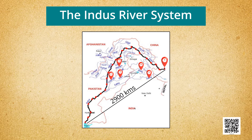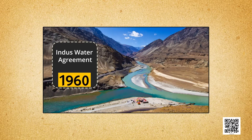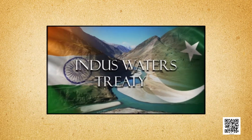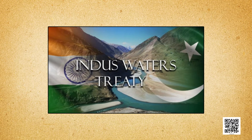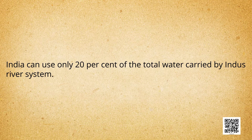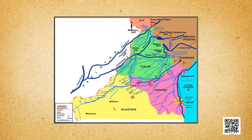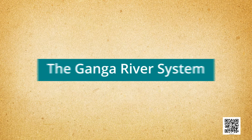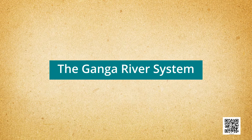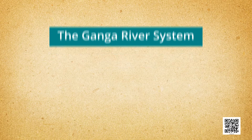A little over one-third of the Indus basin is located in India, in the states of Jammu and Kashmir. According to the regulations of the Indus Water Treaty of 1960, India can use only 20% of the total water carried by the Indus River System. This water is used for irrigation in Punjab, Haryana, and the southern and western parts of Rajasthan.